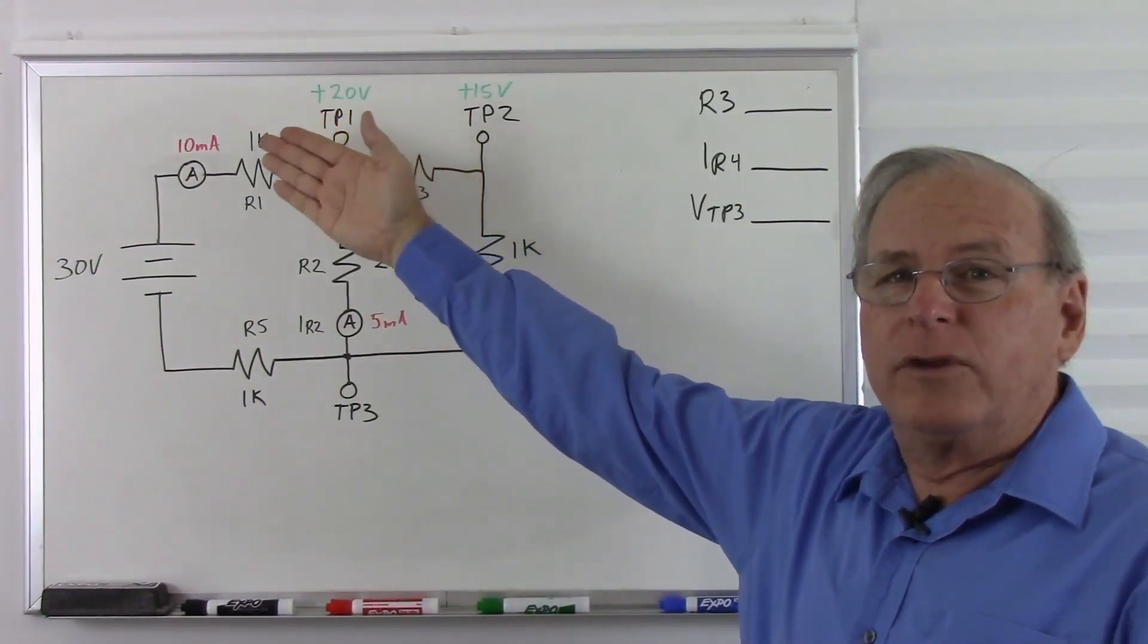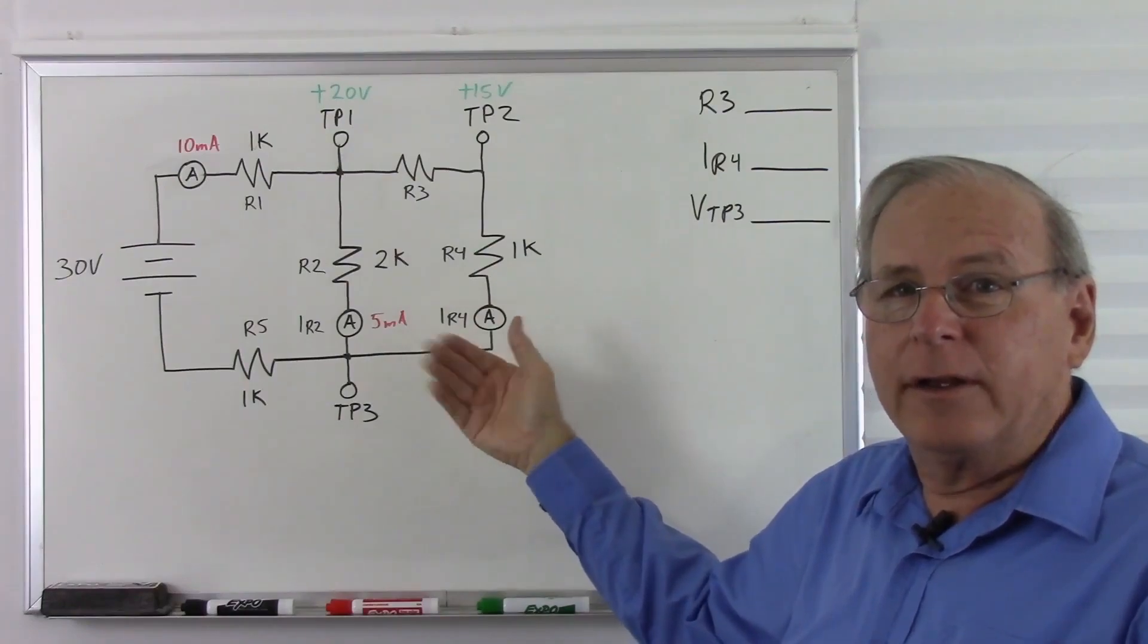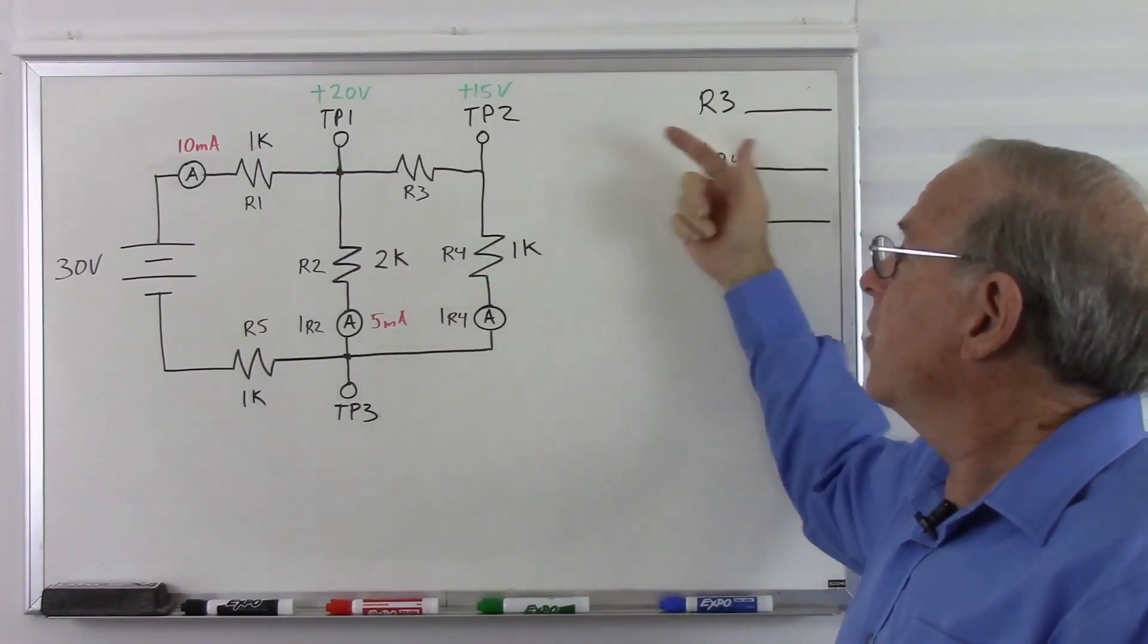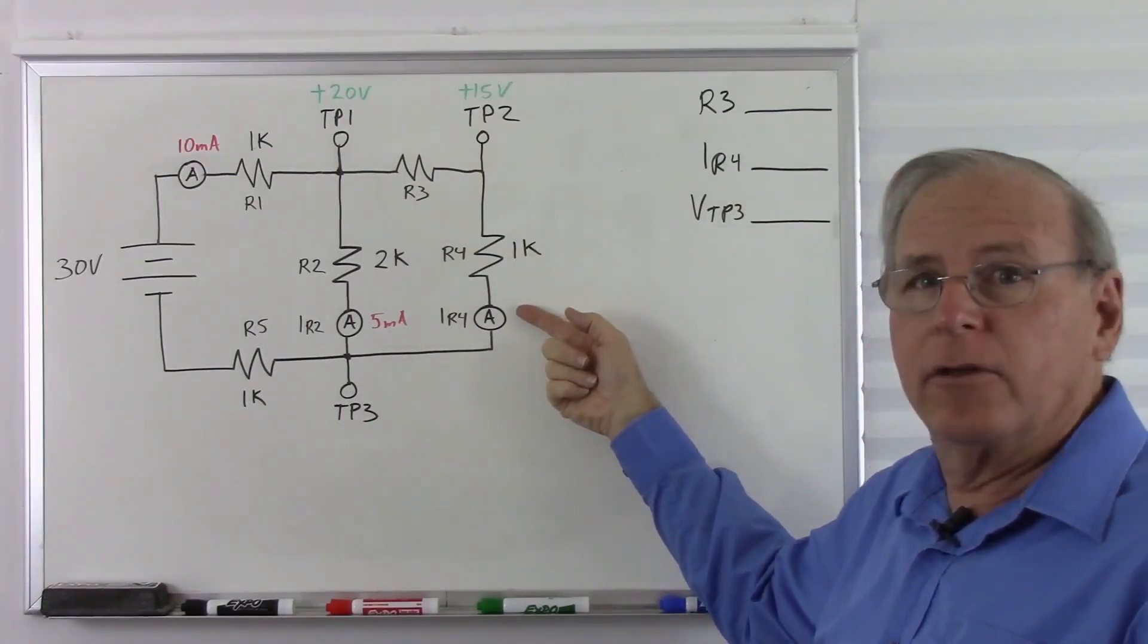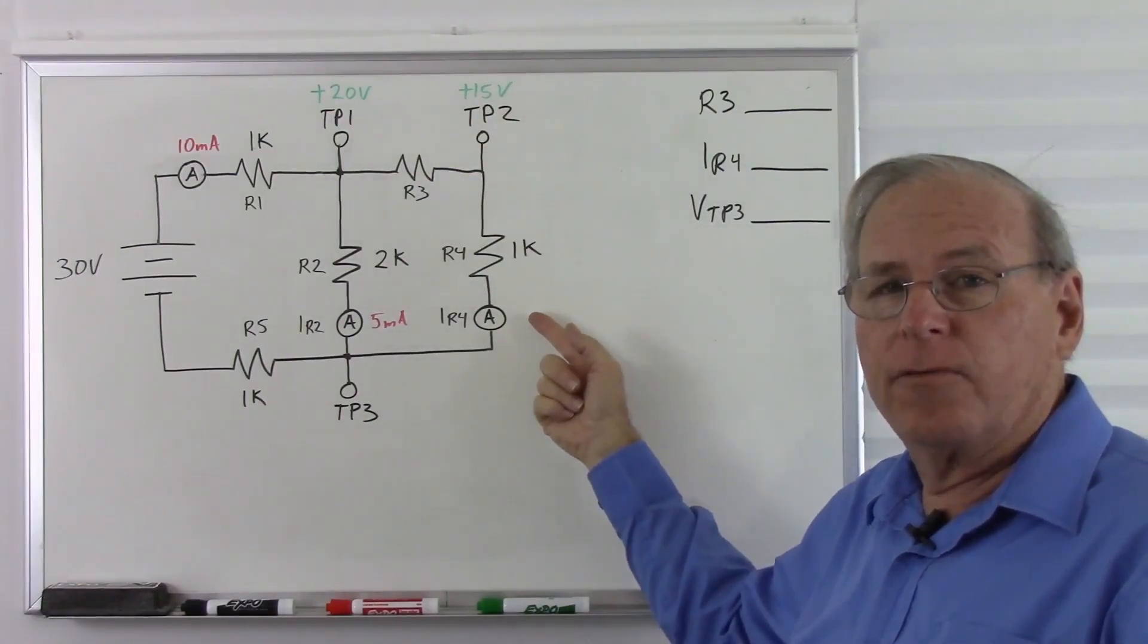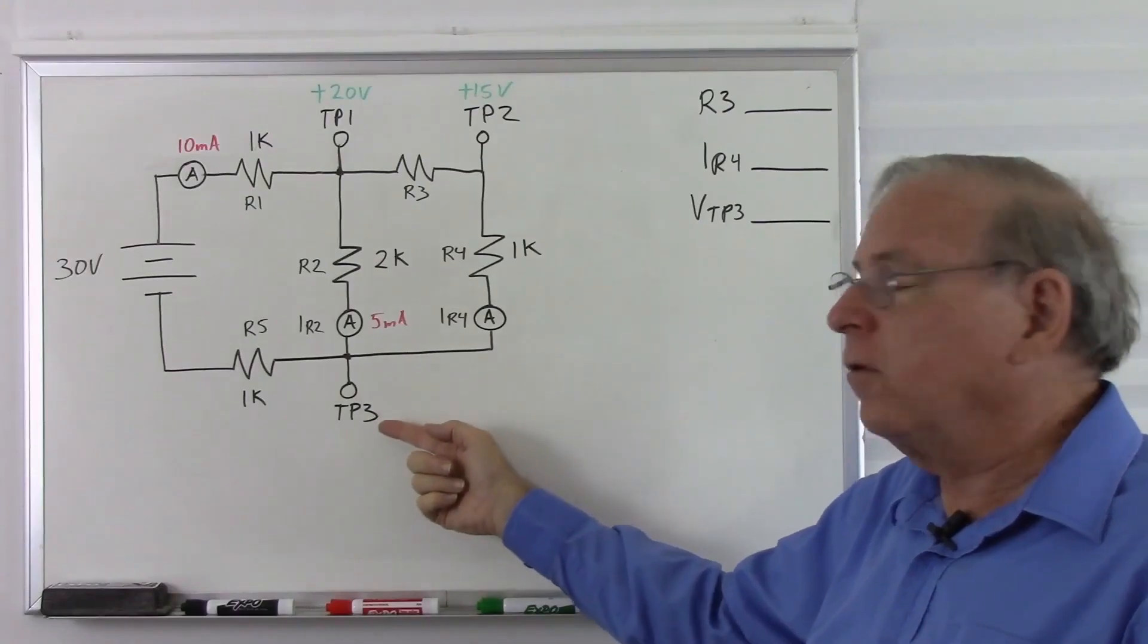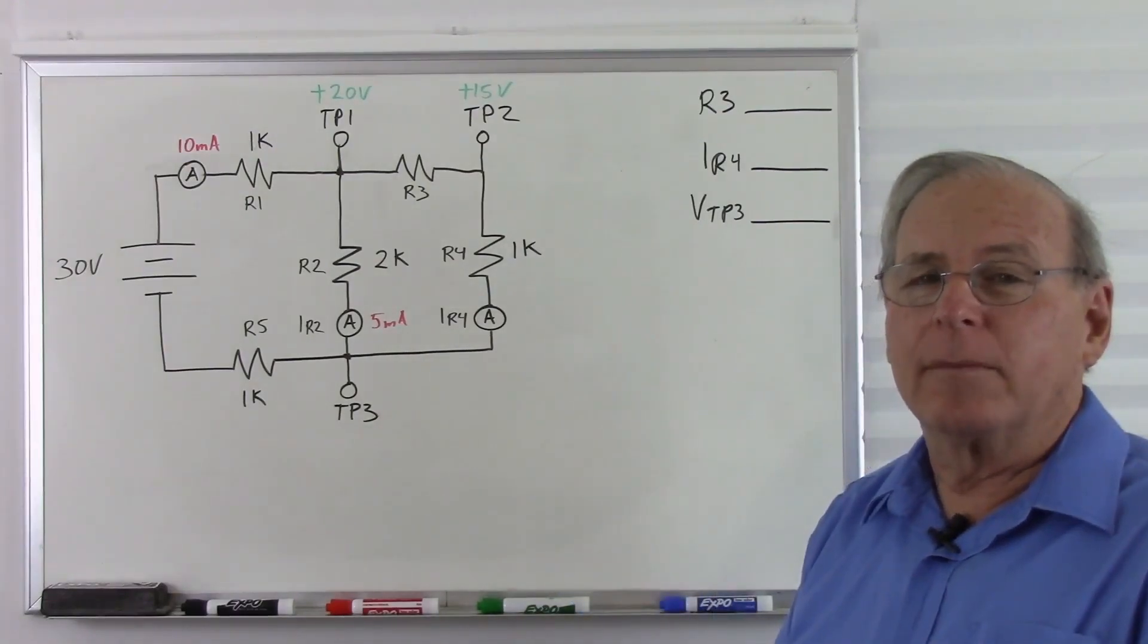Here's our circuit. I don't want to tell you everything that's here. You can see it. But all we need to find is, what's the value of R3? What is the current through R3 and R4? And what is the voltage at test point 3? Pause the video and solve the problem.